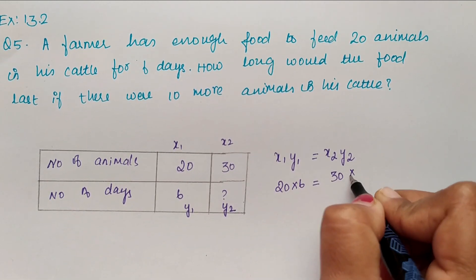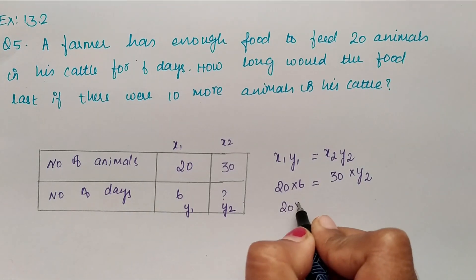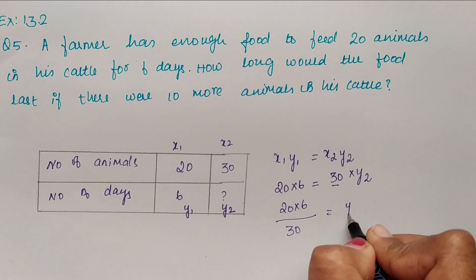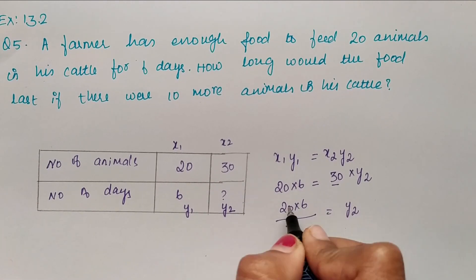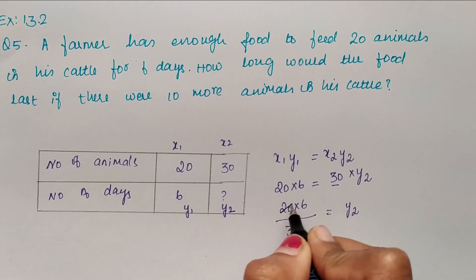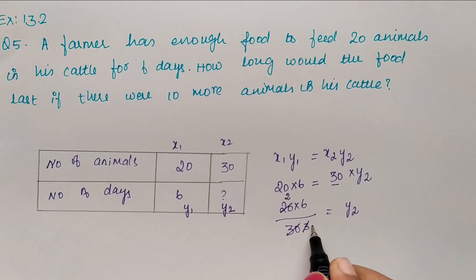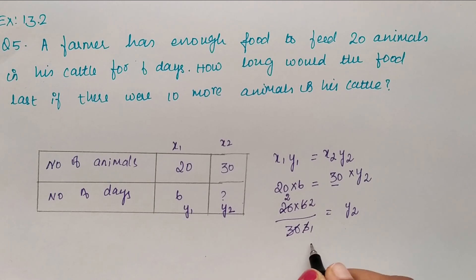x2 is 30 into y2. So 20 into 6 divided by 30 equals y2. We can divide by 10: 2 tens are 20, 3 tens are 30. 1 three is 3, 2 threes are 6. So 2 into 2 is 4, y2 equals 4.